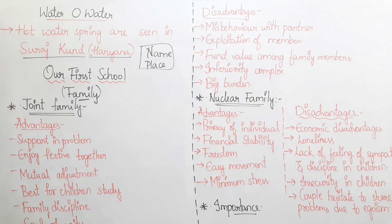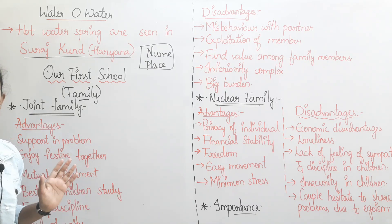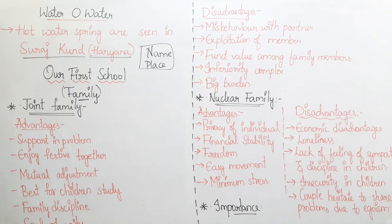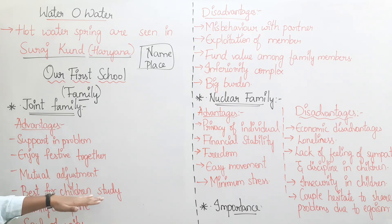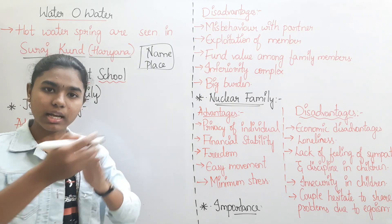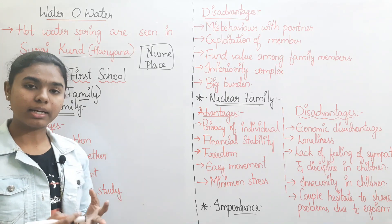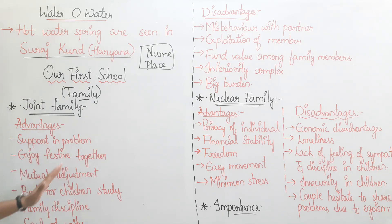The advantages of joint family: first, support during problems — if you have any financial or other problems, your family will support you. Second, enjoy festivals and functions together. Third, mutual adjustment — if you have 10 to 12 members in a family, everyone learns to adjust. Fourth, best for children's development — kids benefit from having grandparents and other family members. Fifth, family discipline and the spirit of unity — living in a joint family helps develop unity.